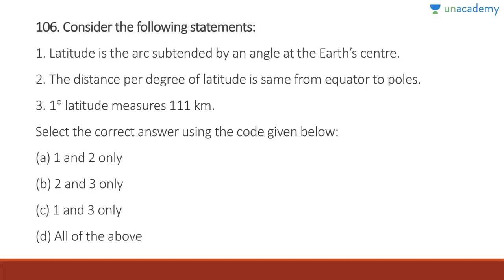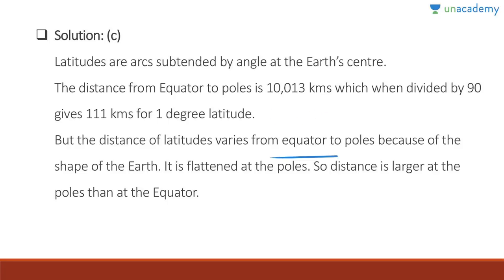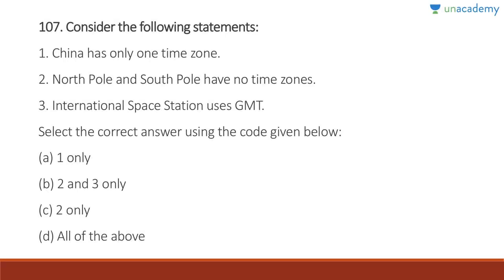Question 106: Latitude is the arc subtended by an angle at the Earth's center — correct. The distance from one latitude to the next is equal throughout — wrong, it is flattened at the poles, so distance is larger at the poles than at the equator. One degree of latitude equals 111 kilometers — correct. Answer is C, one and three. The distance from the equator to the poles is 10,000 km; divided by 90, you get 111 km per degree.